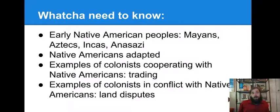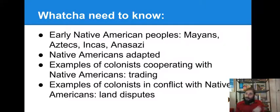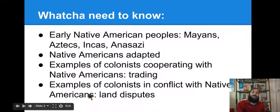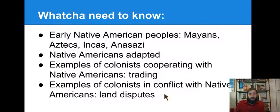We'll also look at examples of colonists cooperating with Native Americans — so when the colonists came over from Europe, how did they get along? Cooperating and trading is the best example of that. And we're also going to look at examples of colonists in conflict with Native Americans — they fought over land, land disputes.